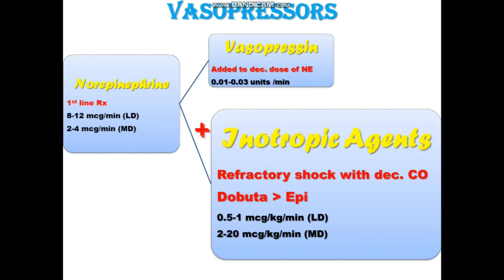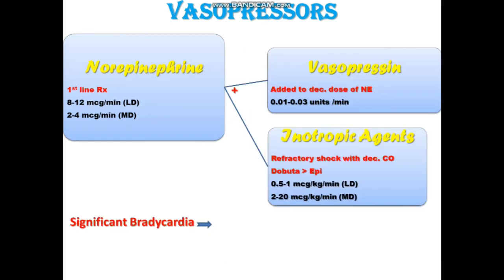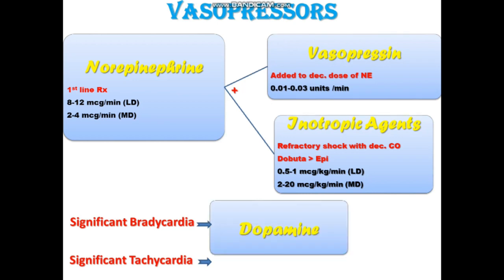The maintenance dose of Dobutamine is 2 to 20 micrograms per kg per minute. Norepinephrine is always the first choice in septic shock, but there are two exceptions: when there is significant bradycardia or significant tachycardia, then norepinephrine is not the first choice.